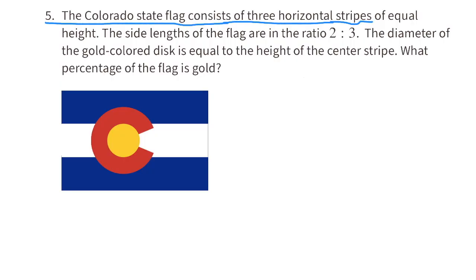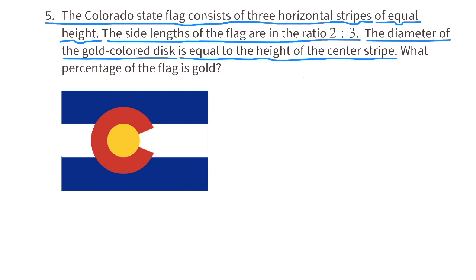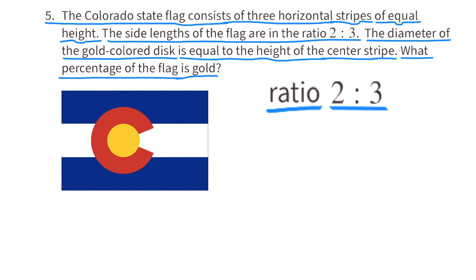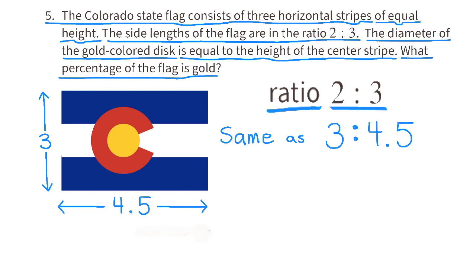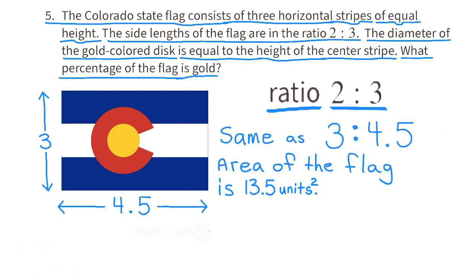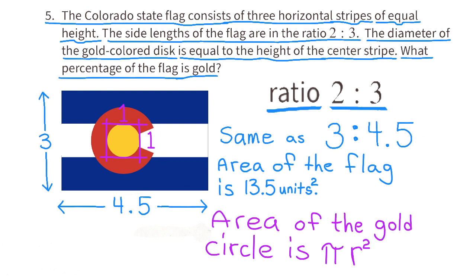Problem number 5: The Colorado state flag consists of three horizontal stripes of equal height. The side lengths of the flag are in the ratio 2 to 3. The diameter of the gold-colored disc is equal to the height of the center stripe. What percentage of the flag is gold? The ratio 2 to 3 is the same as 3 to 4.5, which means I can use the height as 3 units and the width as 4.5 units. The area of the flag is 3 times 4.5, or 13.5 units squared. The gold-colored disc diameter equals the height of the center stripe, and the center stripe is one unit tall.